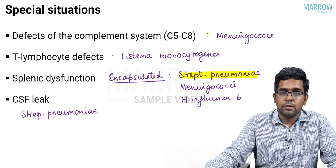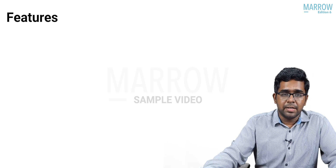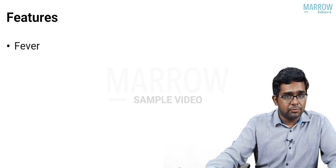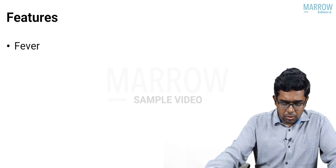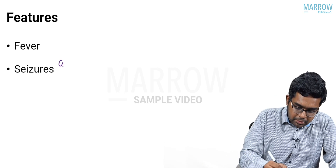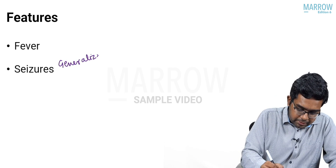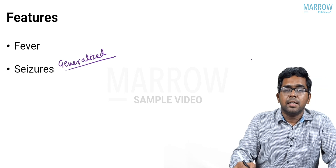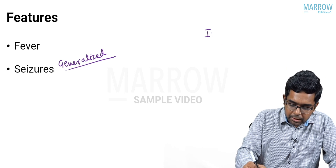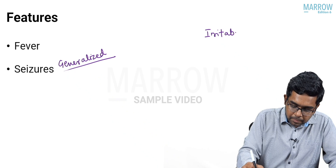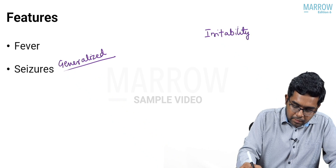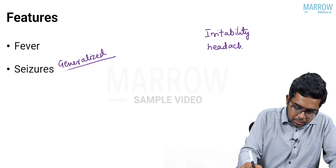Now we will move on to the features of meningitis in children. Because of the infection, the child will have fever. The child can also have seizures, usually a generalized seizure like GTCS. Other features include irritability, headache in older children, as well as photophobia.